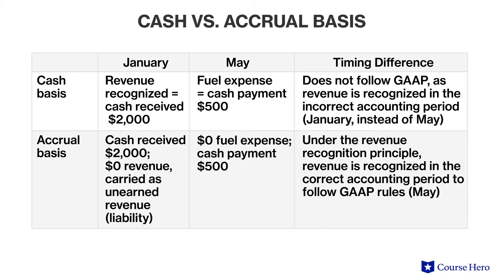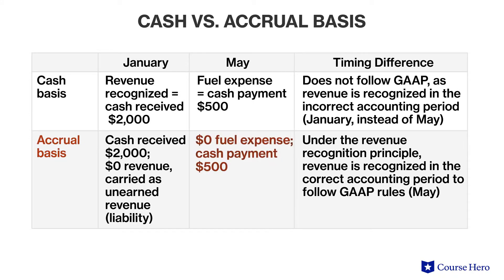There are a few ways in which cash basis and accrual basis are different. Suppose that a customer books a flight from Toronto, Canada to Reykjavik, Iceland in January and pays $2,000 to Global Air. The departure date is in May, four months away. If Global Air were to use cash basis accounting, it would recognize the $2,000 revenue in January when the cash is received. If Global Air were to use accrual basis accounting, it would recognize the revenue in May when the flight actually takes place and the services are rendered to the customer.